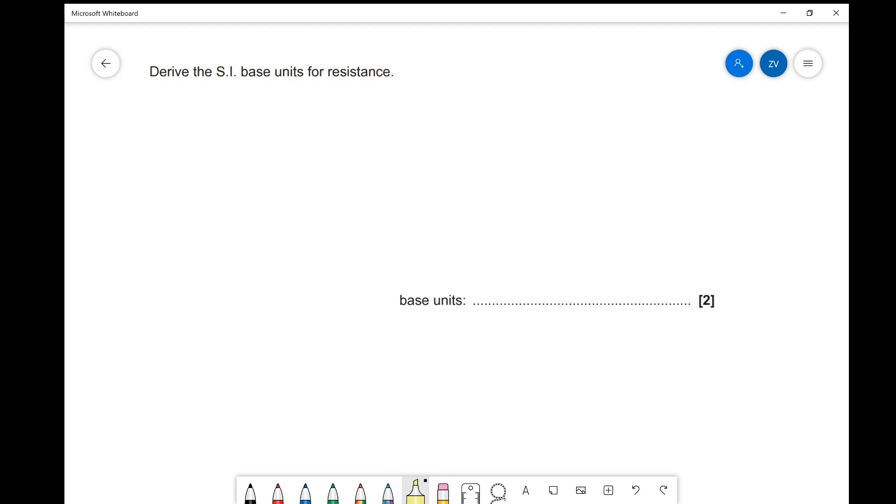It's asking us to derive the SI base units for resistance. Okay, so let's get started. The first thing to do, as always, is just to write down a formula. So we know that resistance is voltage divided by current, V over I. Once again, it's a formula given in your formula booklet.